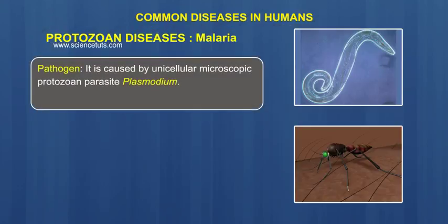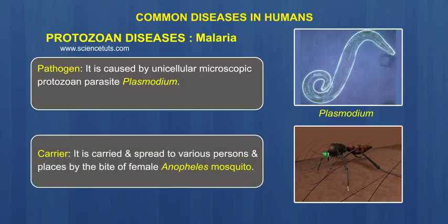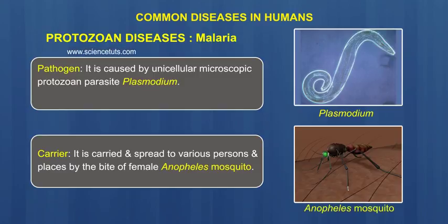Pathogen: Malaria is caused by a unicellular microscopic protozoan parasite called Plasmodium. Carrier: It is carried and spread to various persons and places by the bite of a female Anopheles mosquito.